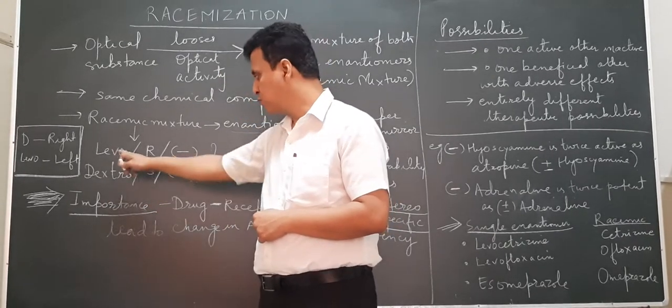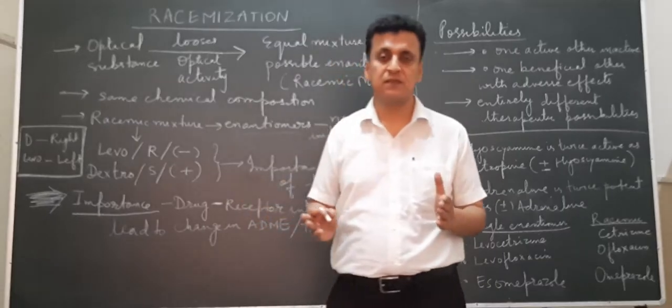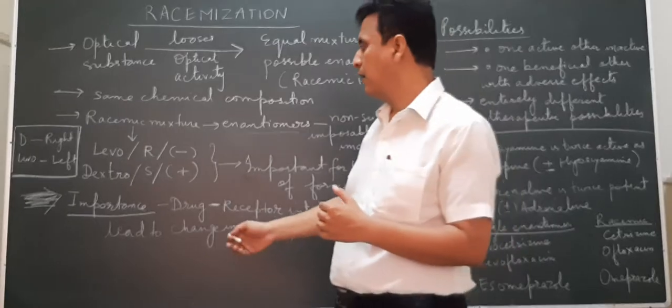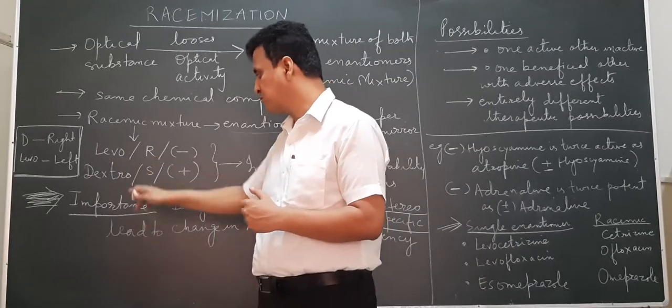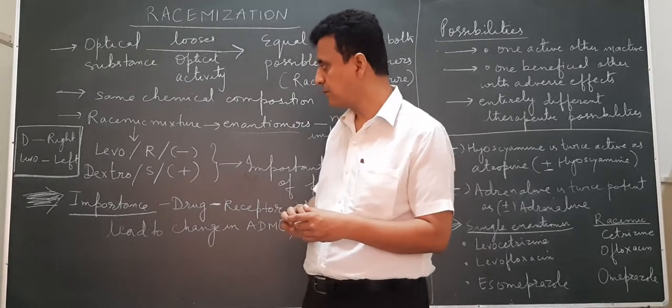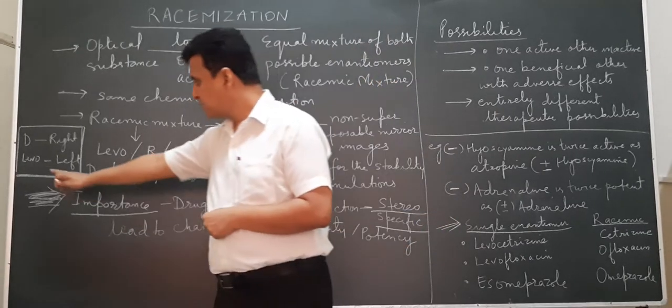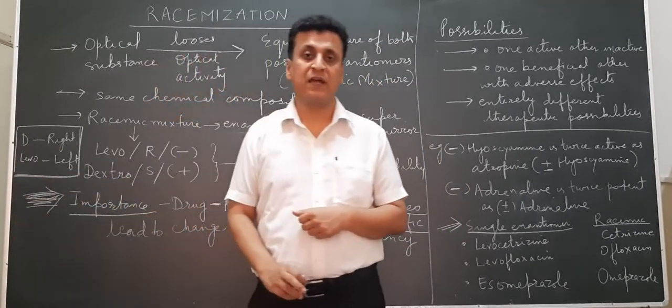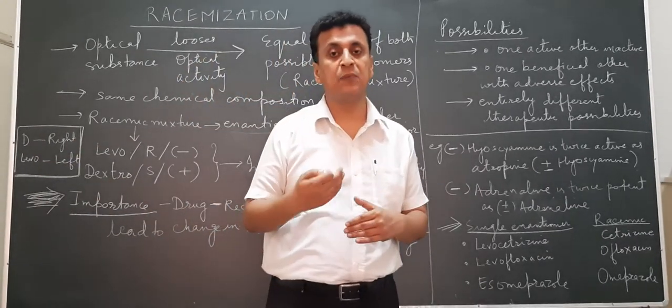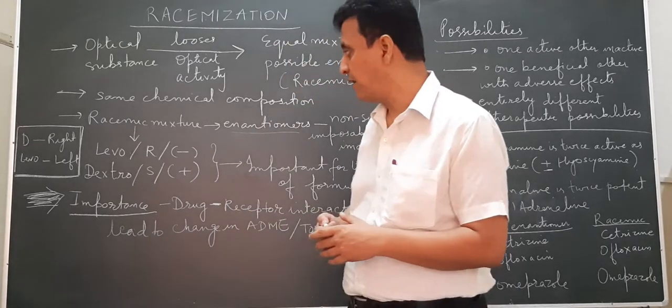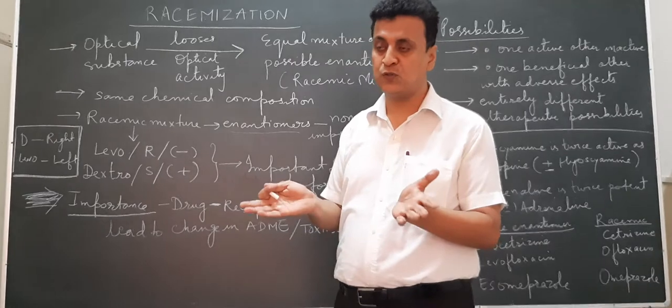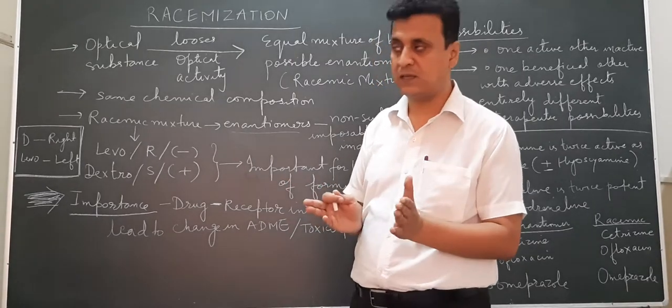The enantiomers can be levo-rotatory or dextro-rotatory. Levo can be represented as minus or L, and dextro as plus or S or D. The dextro form rotates plane polarized light in the right direction, whereas the levo form rotates plane polarized light in the left direction. The net effect is zero.